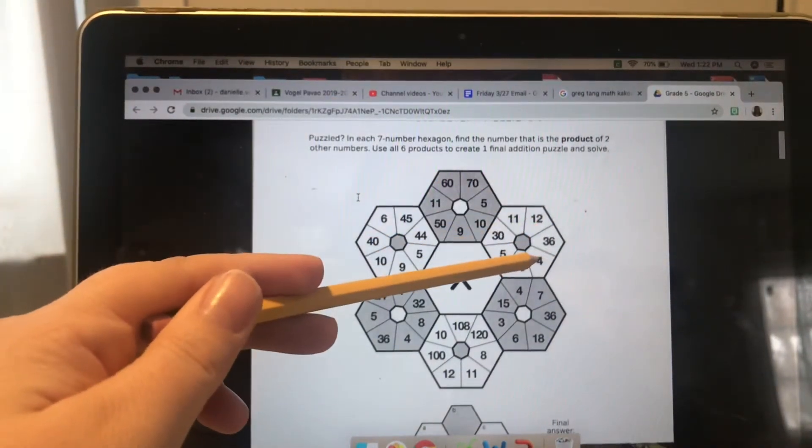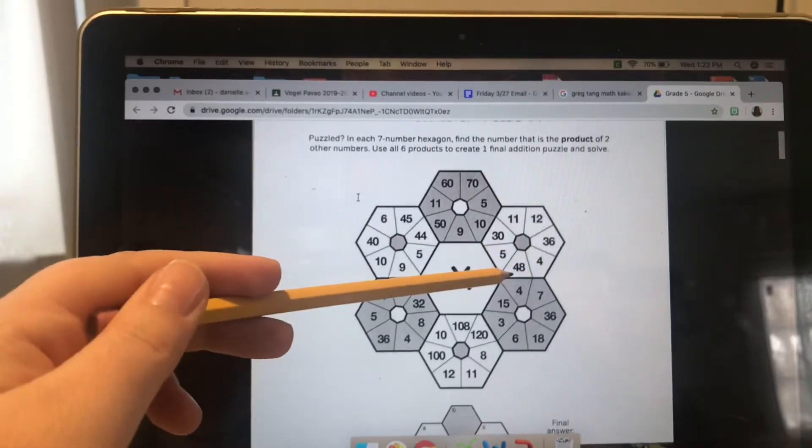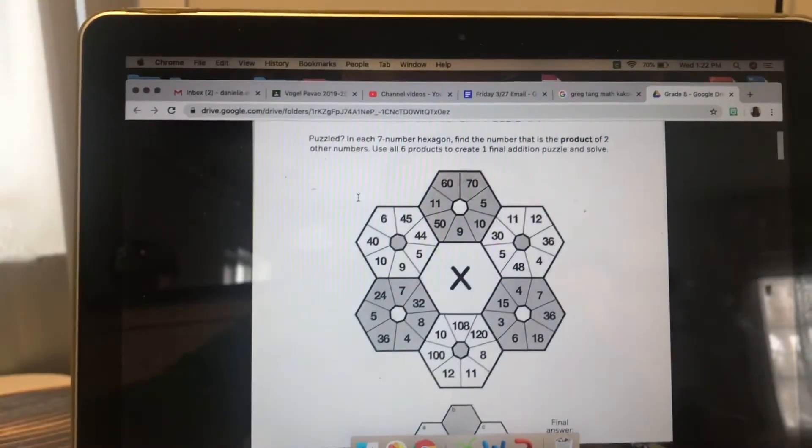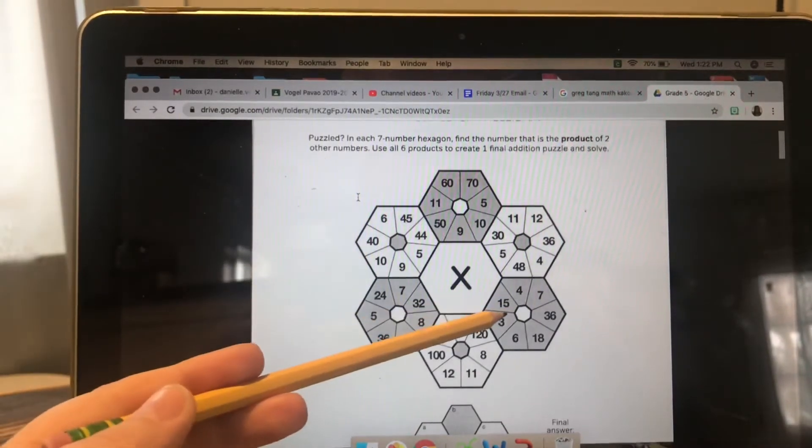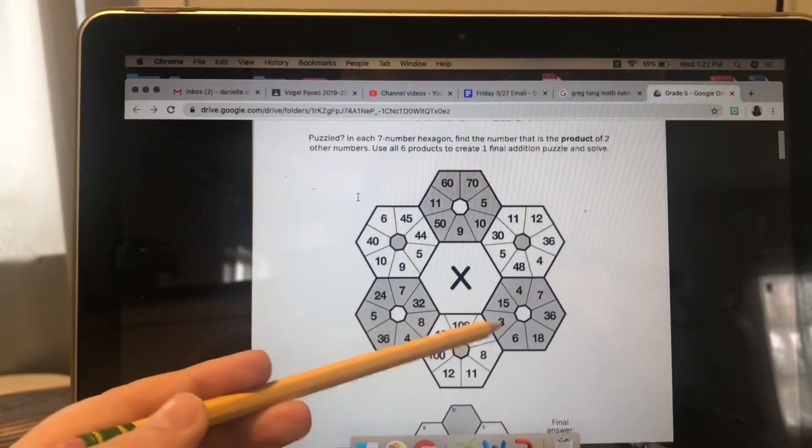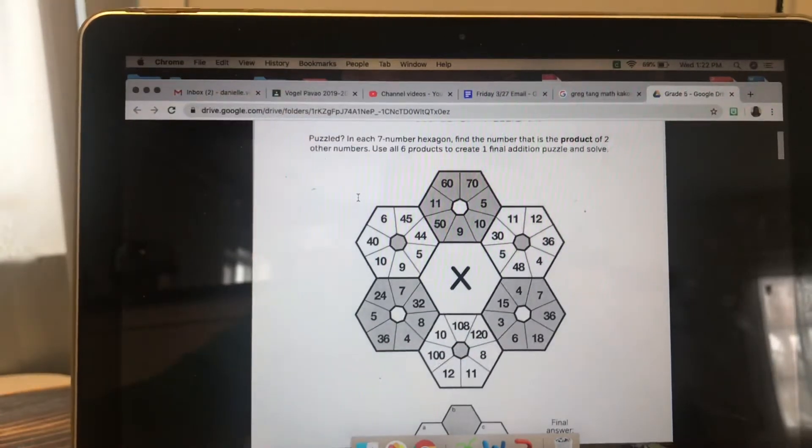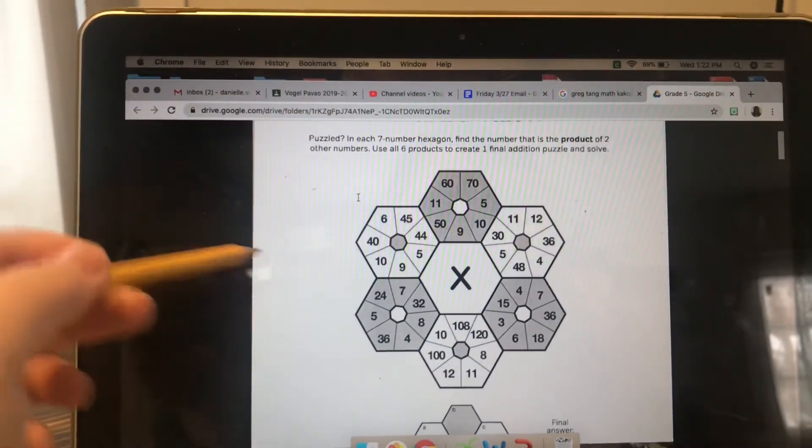Okay, 12 times 4 is 48. So I'm gonna write it down. 48. 3 times 6 is 18. I'm putting 18 down over on my paper.